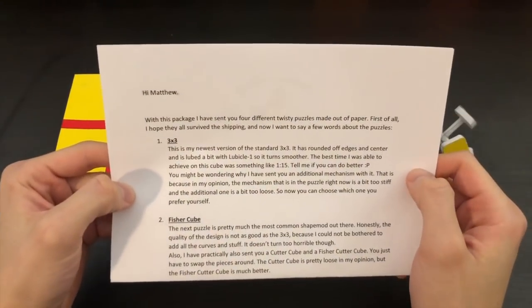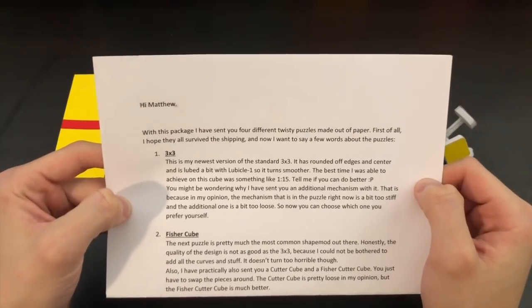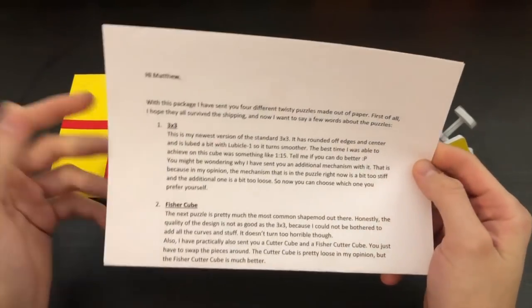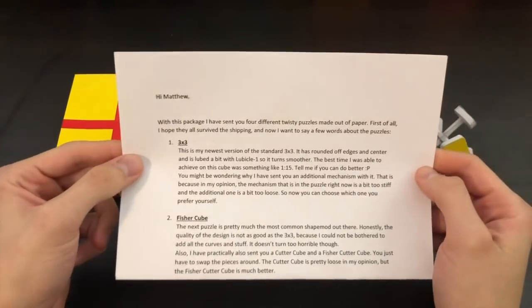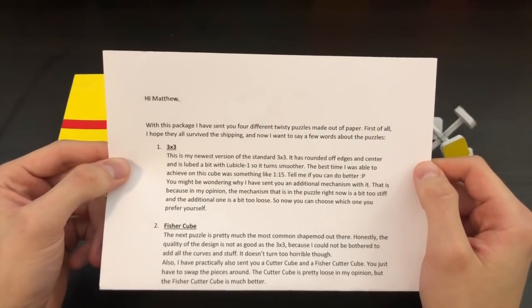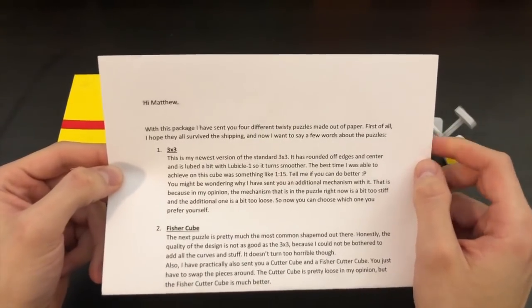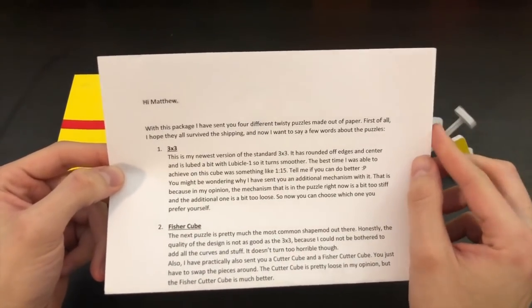Hi Matthew, with this package I've sent four different twisty puzzles made out of paper. First of all I hope they all survive the shipping and now I want to say a few words about the puzzles. 3x3: This is my newest version of the standard 3x3. It has rounded off edges and center and is lubed a bit with Lubical One so it turns smoother. The best time I was able to achieve on this cube was something like 1 minute 15 seconds. Tell me if you can do better.